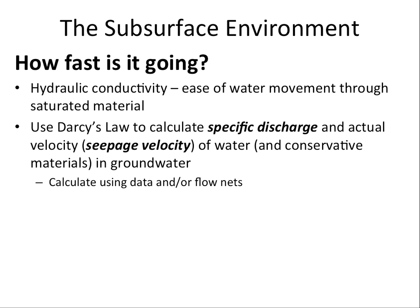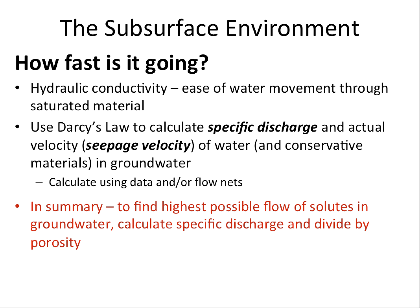In summary, we've learned about hydraulic conductivity — the ease with which water moves through saturated material. We know how to use Darcy's Law to calculate specific discharge and then actual velocity, otherwise known as seepage velocity, which is the velocity of water and conservative materials that don't sorb or stick to soil in groundwater. To find the highest possible flow of solutes in groundwater, we first calculate specific discharge and then divide by porosity to get the seepage velocity.